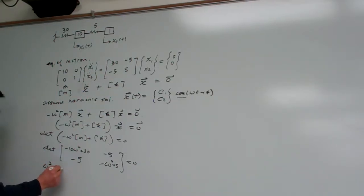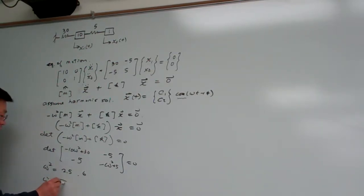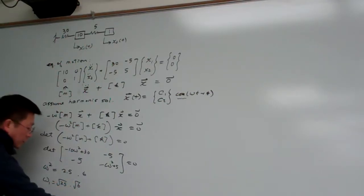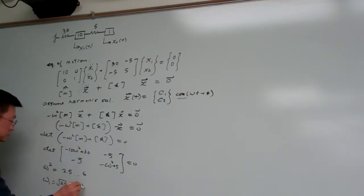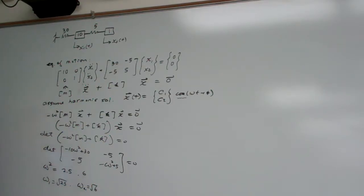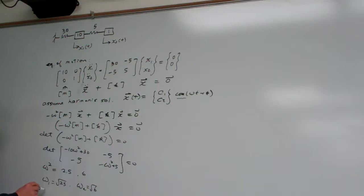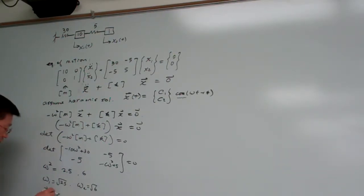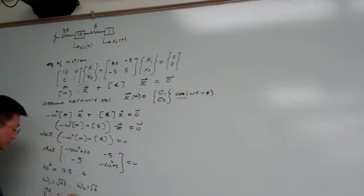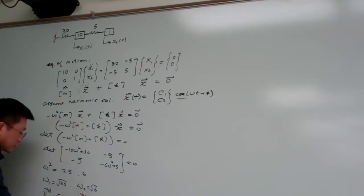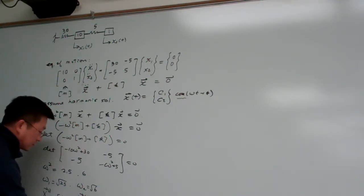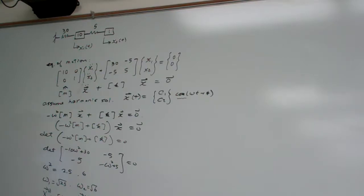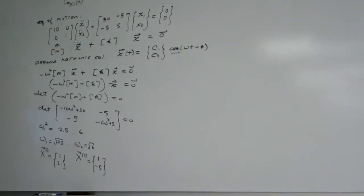From here, we remember, we solve for ω² equal to 2.5 and 6. So basically, we have ω₁ equal to square root of 2.5 and ω₂ equal to square root of 6. And then the corresponding modal vectors, and here, to repeat, basically that one is equal to [1; 2]. The corresponding modal vectors for this one is equal to [1; -5].